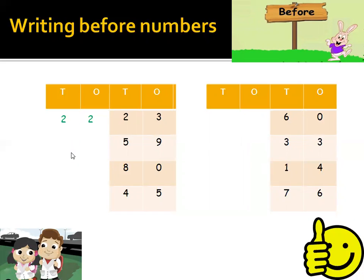Next is 59. Before 59, which number will be there? Can you guess? Yes, it's 58. Next is 80. Before 80, which number will be there? Yes, it's 79. Good job. Now next is 45. Before 45, here comes 44. Now next is 60. Before 60, here comes 59.